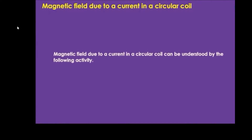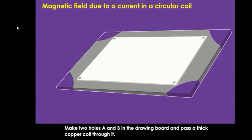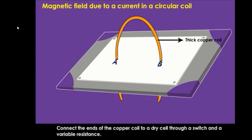Magnetic field due to a current in a circular coil can be understood by the following activity. The circular coil can also be called a circular loop. Take a drawing board and fix the white paper sheet over it. Make two holes A and B in the drawing board and pass a thick copper coil through it. Connect the ends of the copper coil to a dry cell through a switch and variable resistance.